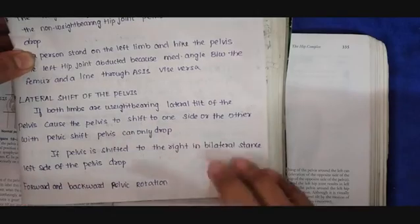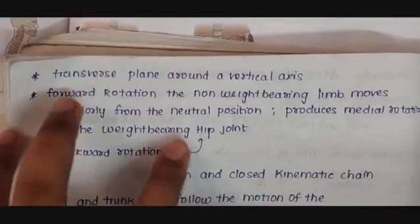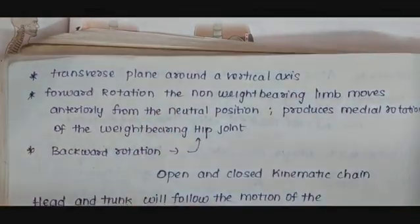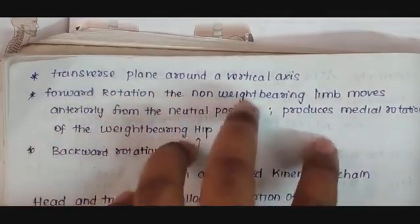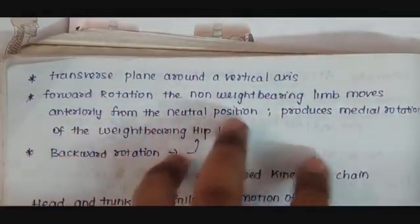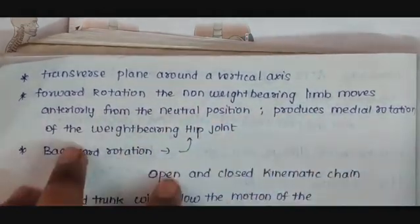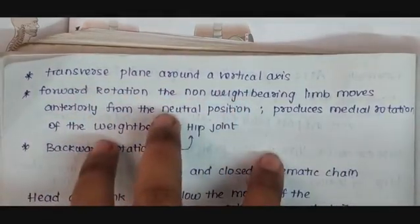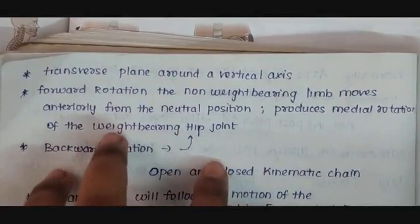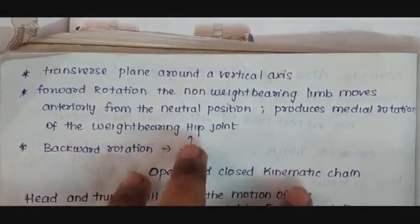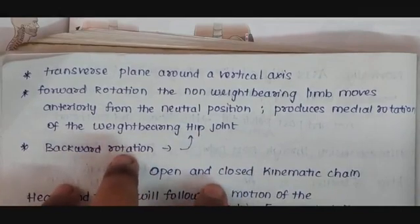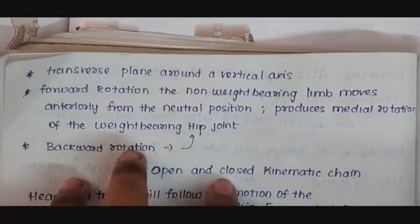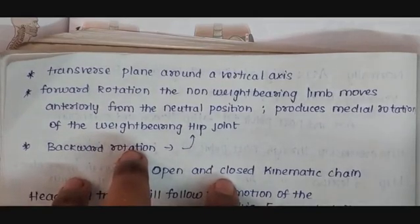Forward and backward pelvic rotation occur in the transverse plane around a vertical axis. During forward rotation, the non-weight-bearing limb moves anteriorly from the neutral position, producing medial rotation of the weight-bearing hip joint. The exact opposite occurs during backward rotation: the non-weight-bearing limb moves posteriorly from the neutral position, producing lateral rotation of the weight-bearing hip joint.